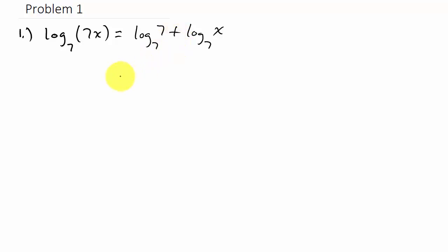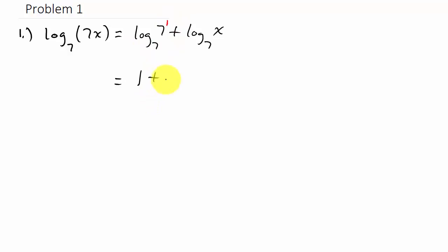We can take this even further. See how the base of the log is seven and this term is also seven — since these are the same, our answer is our exponent. Since there is no exponent, it's understood to be one. So this term is just one, giving us one plus log X base seven as our final answer.